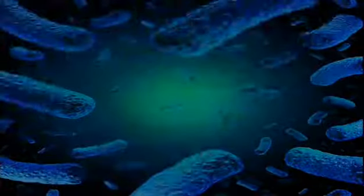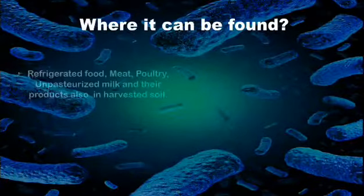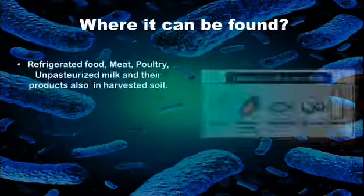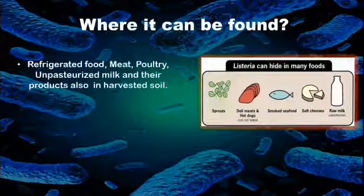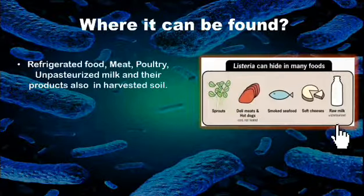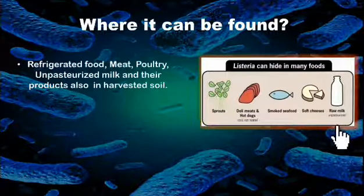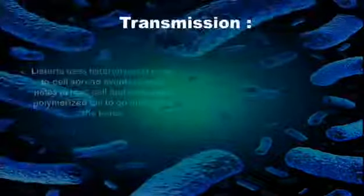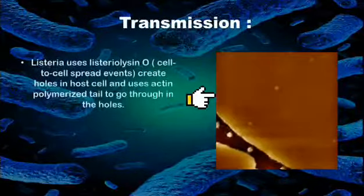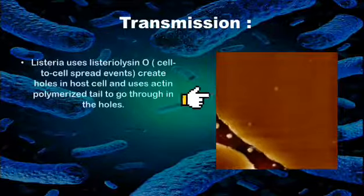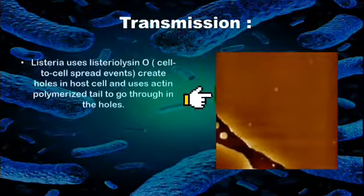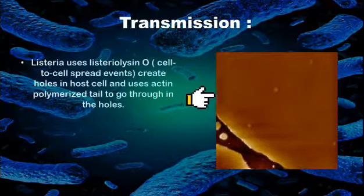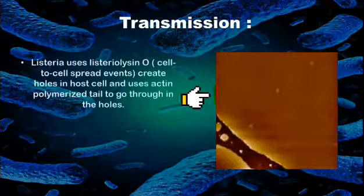Listeria can be found on refrigerated meat or on unpasteurized milk — milk which has not been processed. For transmission, Listeria uses listeriolysin for intracellular spread, meaning cell to cell. It also uses an actin-polymerized tail to move inside the cell.